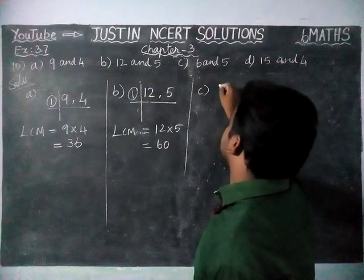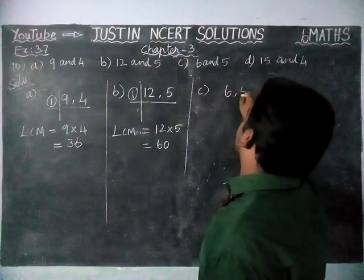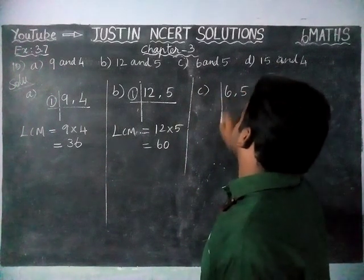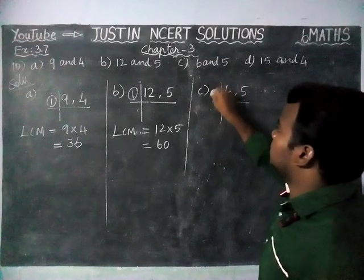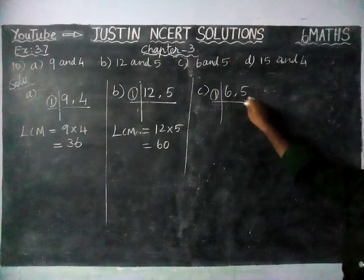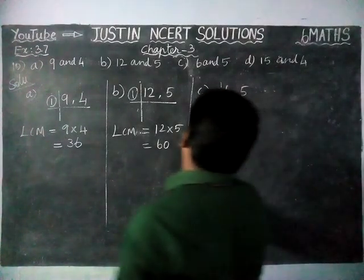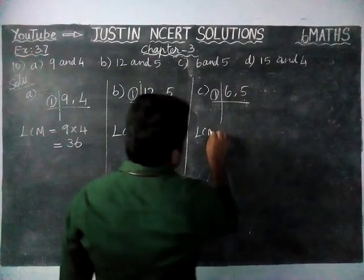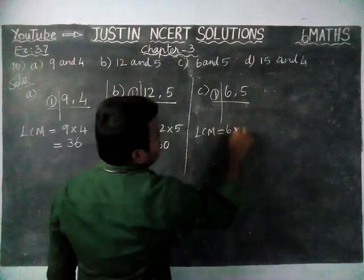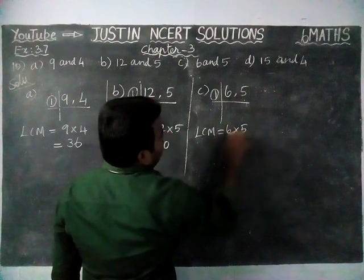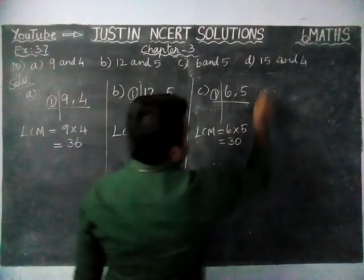Next, part C: 6 and 5. Here also, only 1 is the common factor — no other common factor. So, we can multiply: LCM is equal to 6 × 5 = 30.